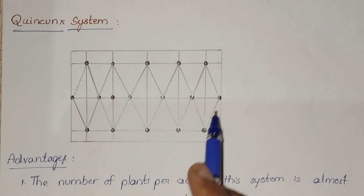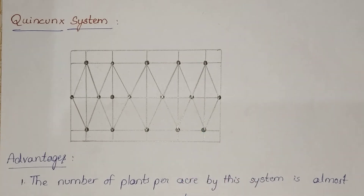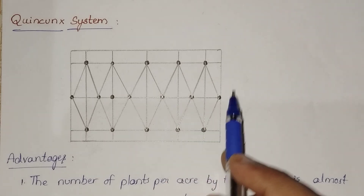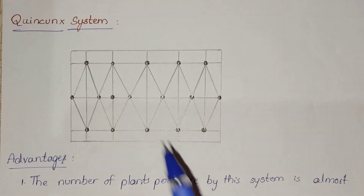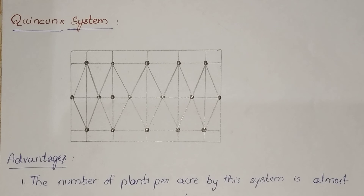The additional tree planted in the center is known as a filler. This additional tree makes the total number almost double that of the square system.